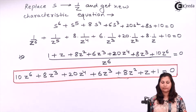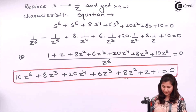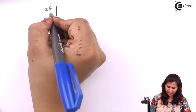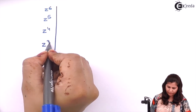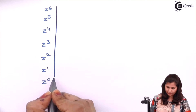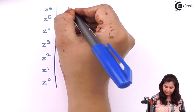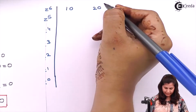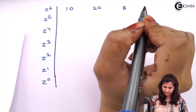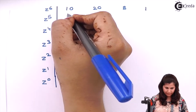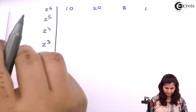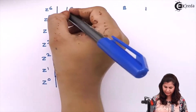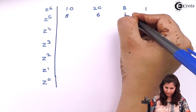Now we repeat the same procedure and obtain the Routh array for z. The rows are z⁶, z⁵, z⁴, z³, z², z¹, z⁰. For z⁶, coefficients of even powers: 10, 20, 8, 1. For z⁵, coefficients of odd powers: 8, 6, 1, 0.